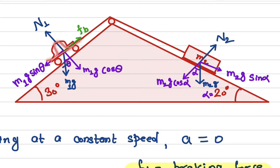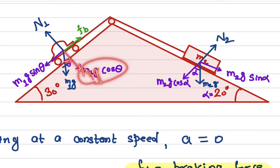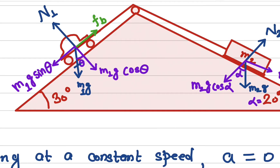We have the car here. The weight of the car acts vertically downward. We resolve this into two components: one perpendicular to the inclined plane, which is m1g cosine theta, and one parallel to the inclined plane, which is m1g sine theta. The normal force acts perpendicular to the surface.